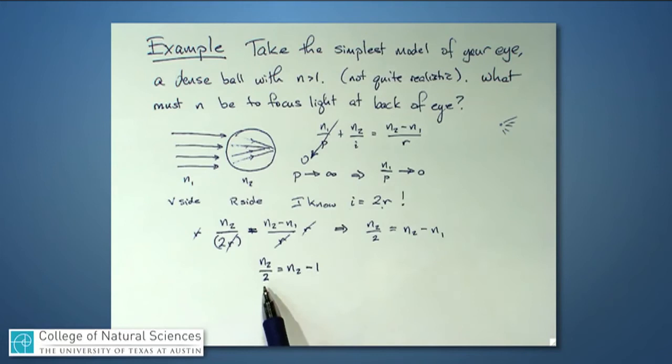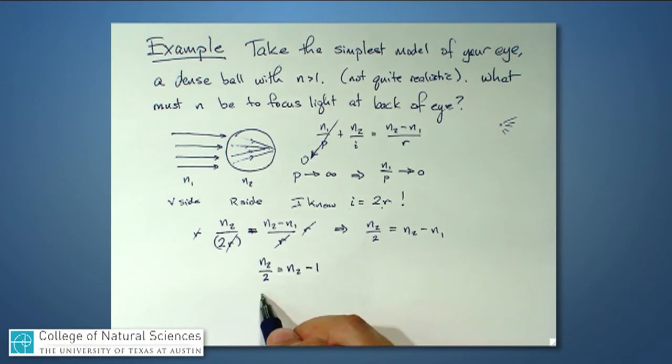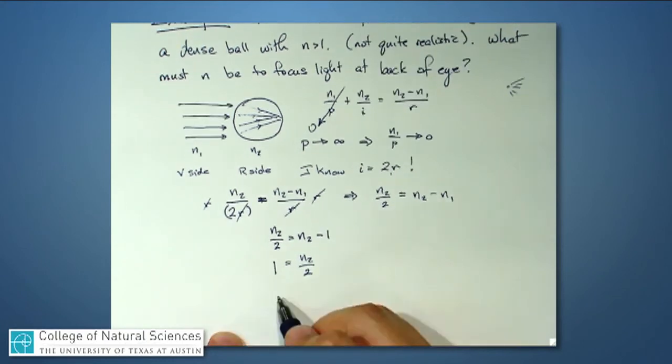I'm going to subtract N2 over 2 from both sides, and I'm going to add 1 to both sides. So I add 1, and I have 1 over there. That equals N2 over 2, or in other words, N2 is equal to 2.